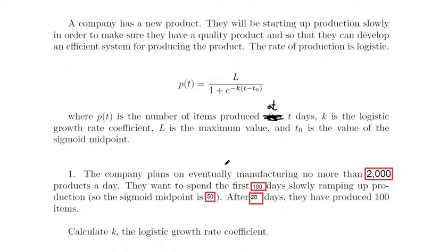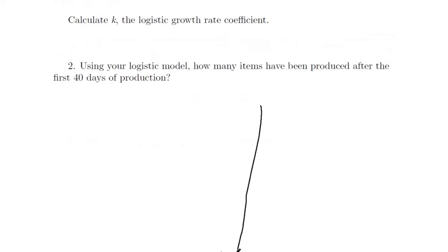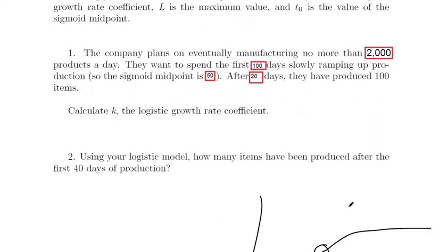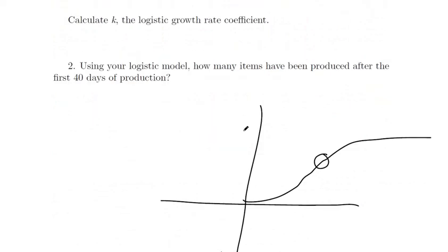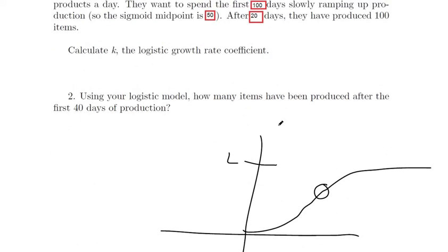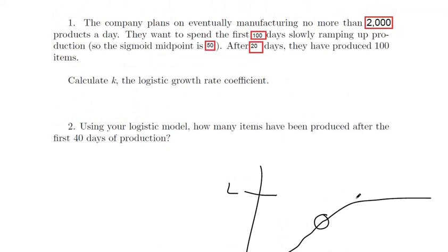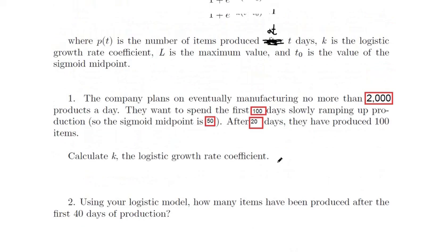Okay, let's see. They define what these values are. L is the maximum value, t sub 0 is the value of the sigmoid midpoint. So we're looking at potentially a function that looks something like this. That would be the sigmoid midpoint. L is the maximum value, that's where we start reaching max capacity. That's how high we can really go on the y-axis. We actually don't ever reach it, we get infinitely close to it.